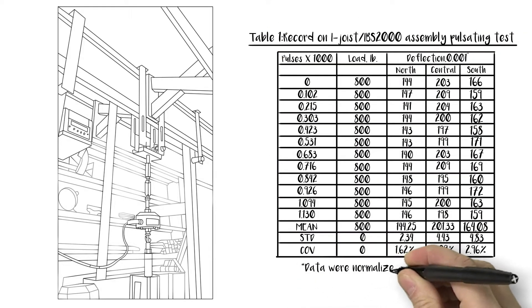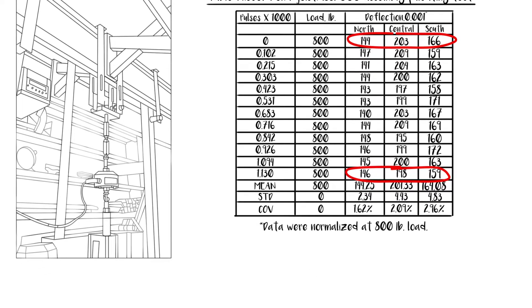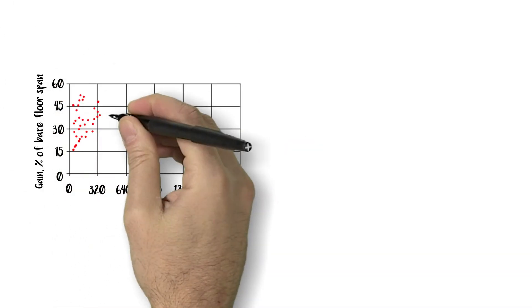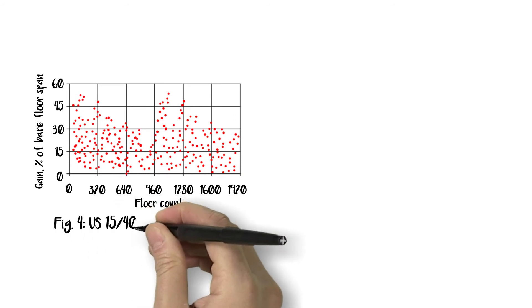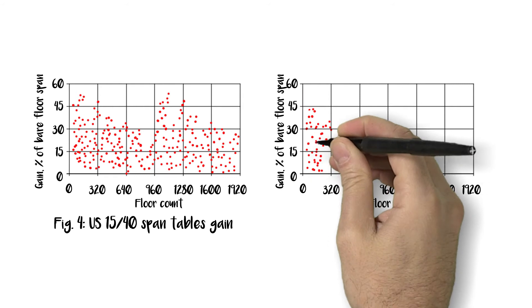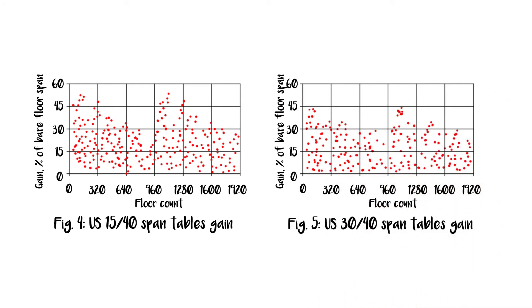So how could you use IBS 2000? To focus on improving performance or to focus on designing a longer span relative to code spans? We can either radically increase floor performance if spans were taken to the max using L over 360 criterion, or if spans were calculated using L over 480 or larger criterion, we can increase spans moderately. Here is the analysis that shows the gain in spans for U.S. floors designed using L over 480 criterion.